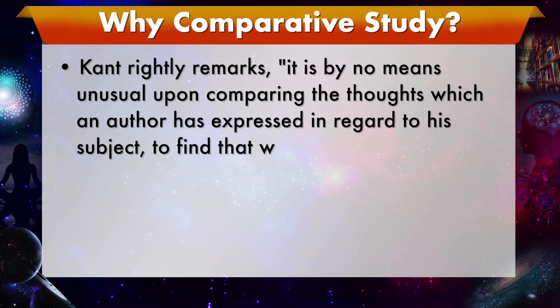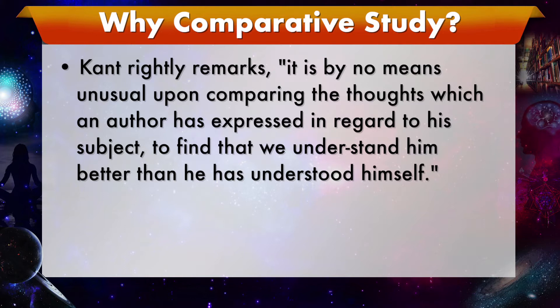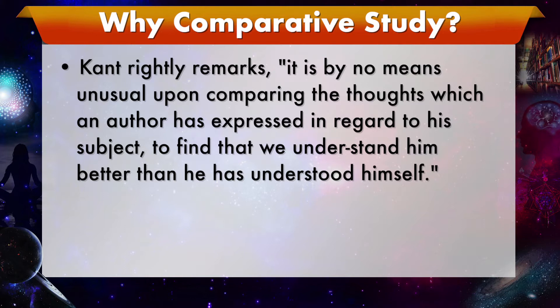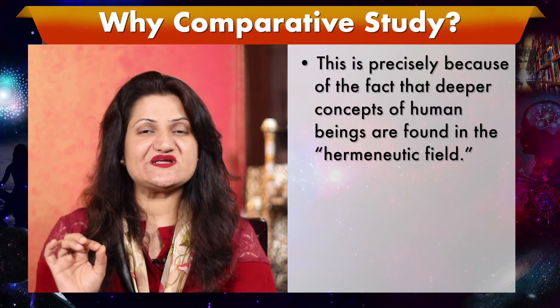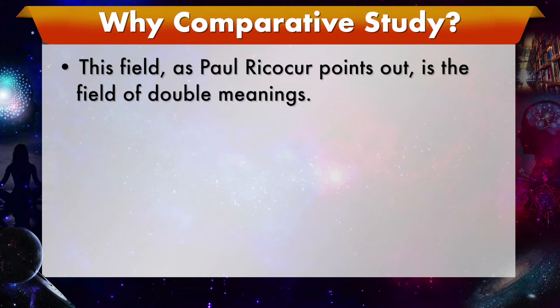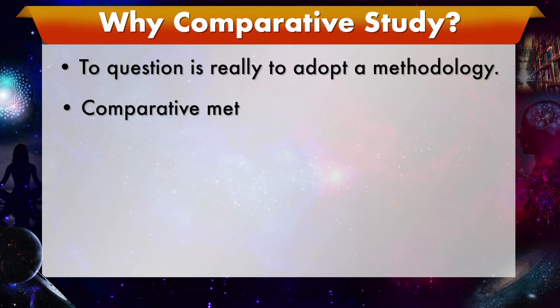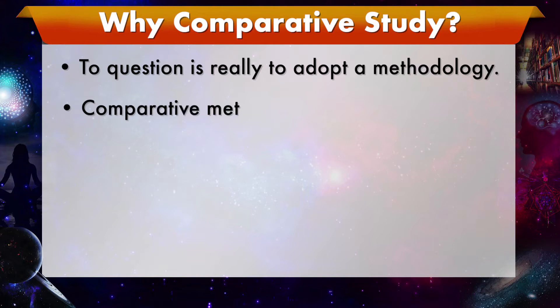Kant rightly remarks it is by no means unusual, upon comparing the thoughts which an author has expressed in regard to his subject, to find that we understand him better than he has understood himself. This is precisely because deeper concepts of human beings are found in the hermeneutic field. This field, as Paul Ricoeur points out, is the field of double meanings. To understand a sign is to view it in the light of a question. To question is really to adopt a methodology — comparative methodology or comparative goal is controlled by comparative questions.